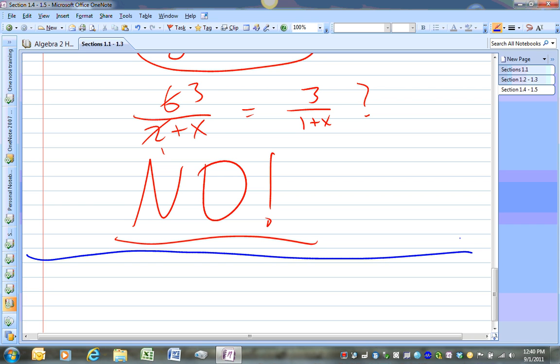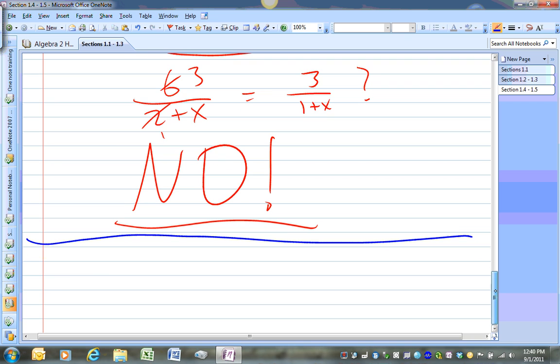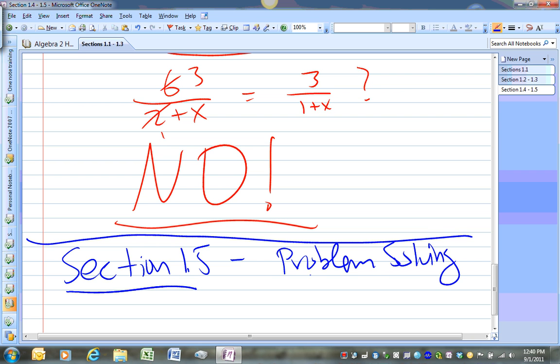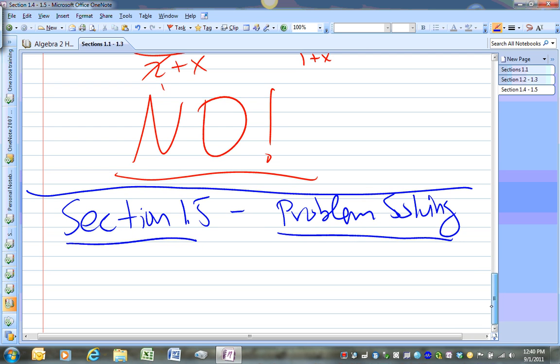is about problem solving strategies and models. So we'll look at a word problem, work it out, and of course we'll do some word problems when we're in class on Friday. So section 1.5, which is about problem solving. So what I'll do is actually type up the word problem. That might be a good way for us to go here. So here's the example.